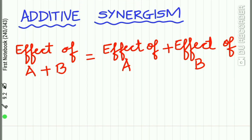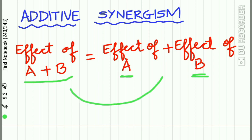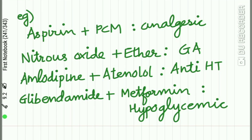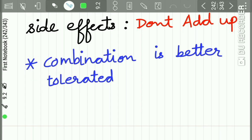In additive synergism, the effects of the two drugs are in the same direction and are simply added up. The combined effect of drug A and drug B equals the sum of the individual effects of drug A and drug B. Examples include aspirin and paracetamol for analgesia, nitrous oxide and ether in general anesthesia, amlodipine and atenolol as antihypertensives, and glibenclamide and metformin as hypoglycemic drugs.